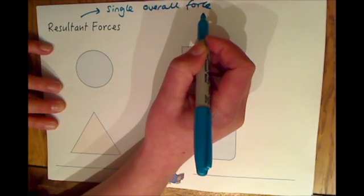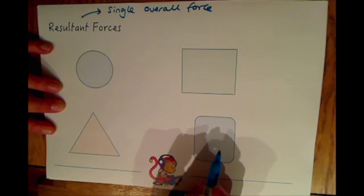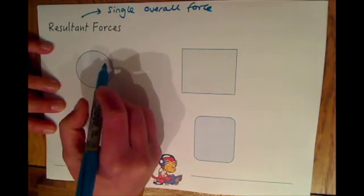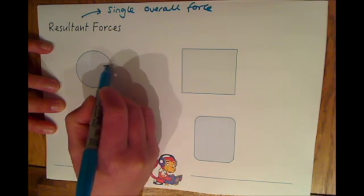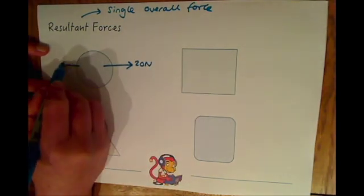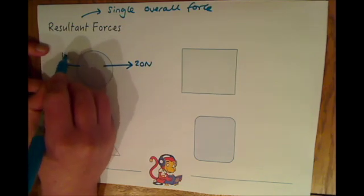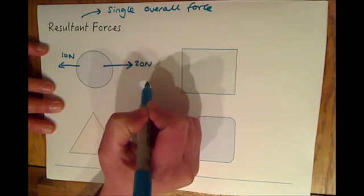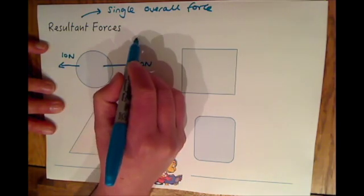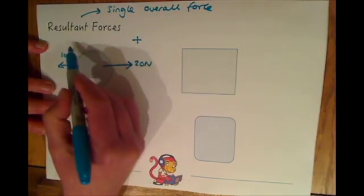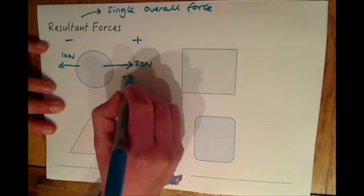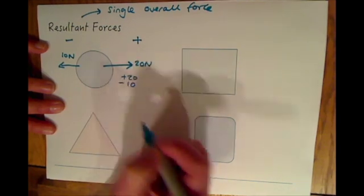When we think about forces acting on objects, there can be a number of forces acting at one time and in different directions. For example, if we think of this circle as a ball, there could be a forward force of 20 newtons and a backwards force of 10 newtons. The important thing with resultant forces is that we take direction into account. So if we take everything to the right as a plus direction and everything to the left as a minus direction, we've got plus 20 newtons and minus 10 newtons.